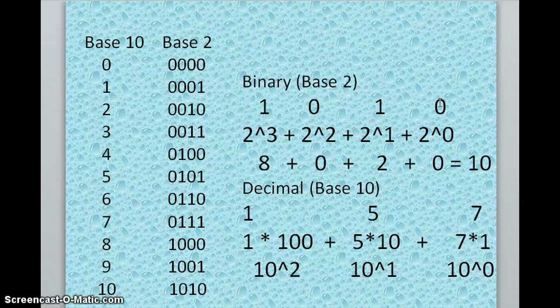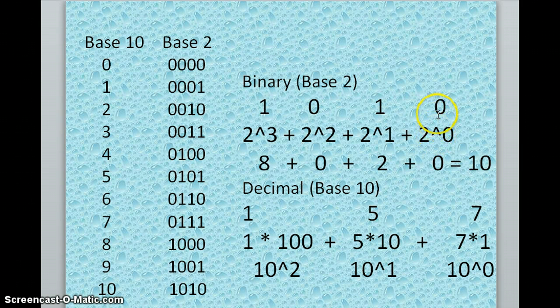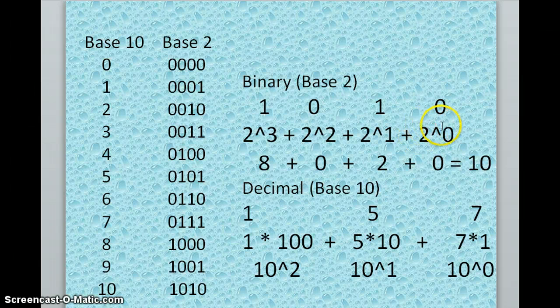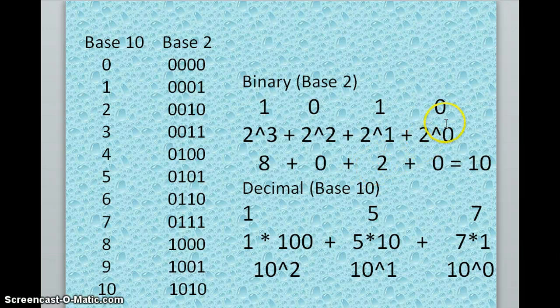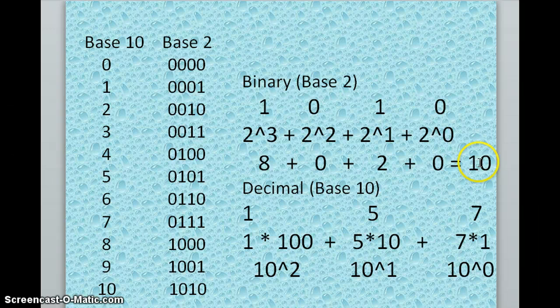So it says here zero. Now, normally we would calculate, okay, 2 to the 0 is 1, and we would add it to the grand total. But since there is a zero, we will not be adding it to the sum to find our decimal value.